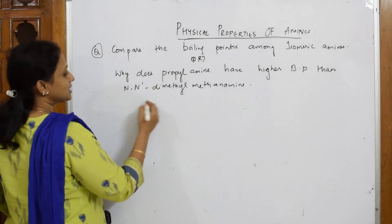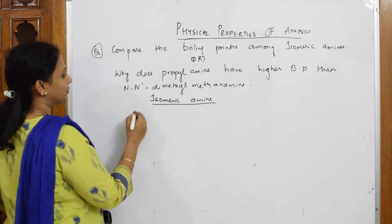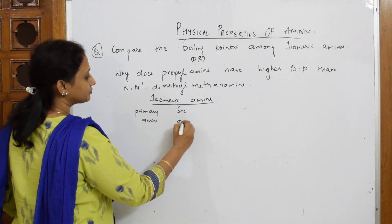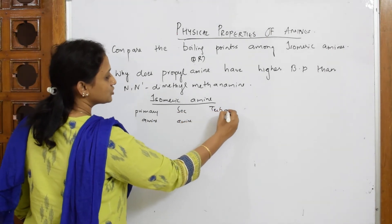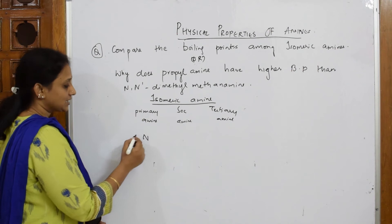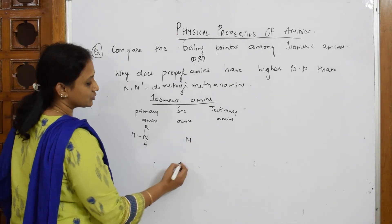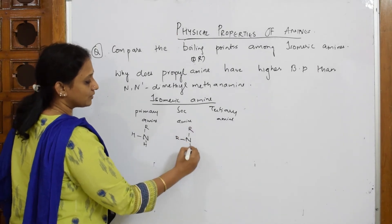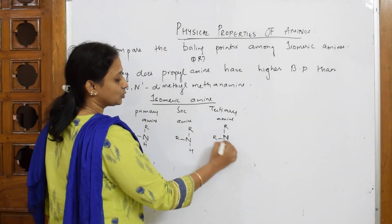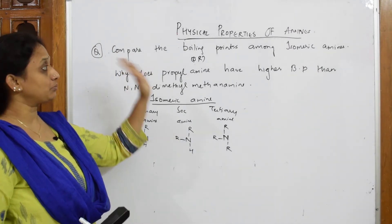Isomeric amines are: primary amine — nitrogen with one alkyl group and two hydrogens; secondary amine — nitrogen with two alkyl groups and one hydrogen; tertiary amine — nitrogen with three alkyl groups and no hydrogen. These are isomeric amines.